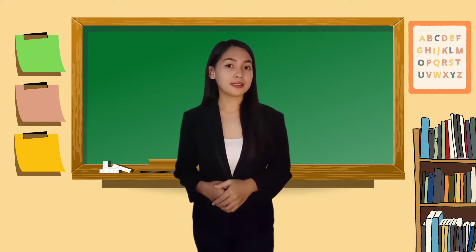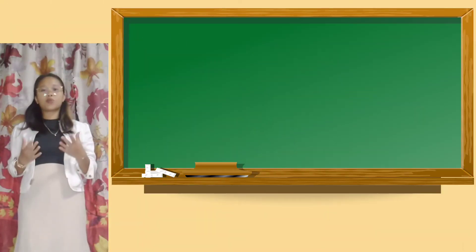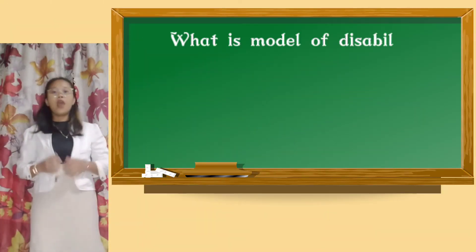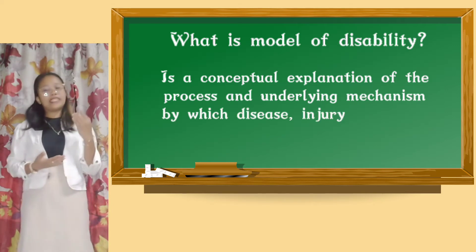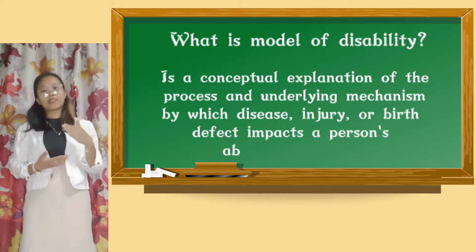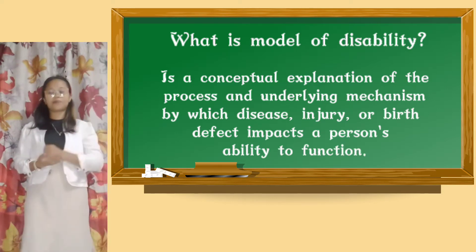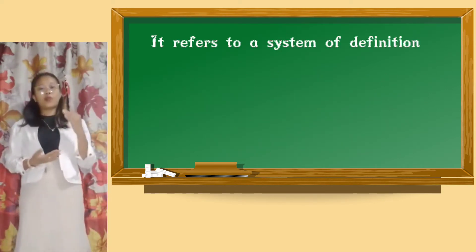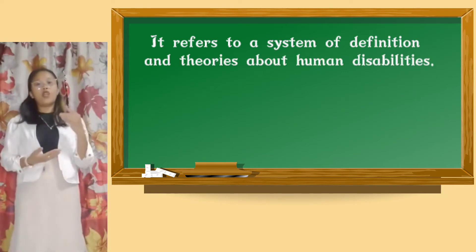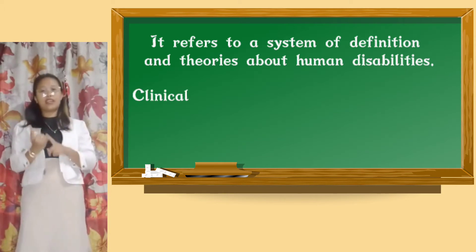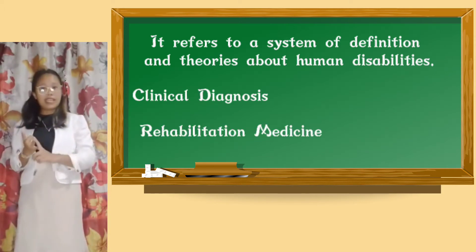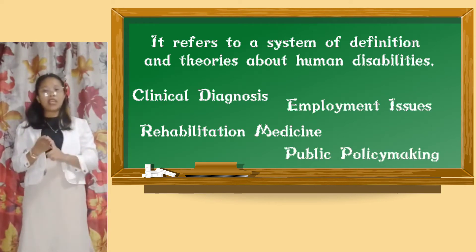Before we proceed, let us first know what is the model of disability. A model of disability is a conceptual process by which underlying mechanisms of disease, injury, or birth defect impact a person's ability to function. This model refers to a system of definitions and theories about human disability that provides a framework for discussion or to explain disability in relation to clinical diagnosis, rehabilitation medicine, employment issues, public policymaking, and other similar concerns.